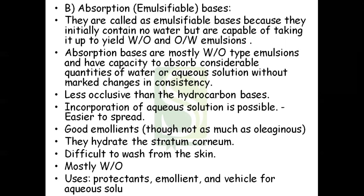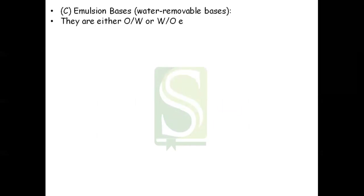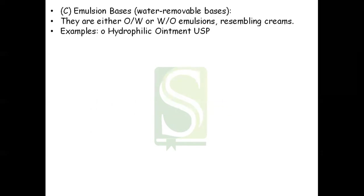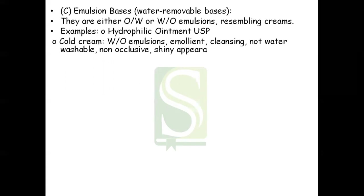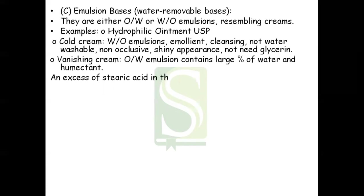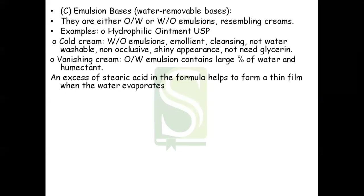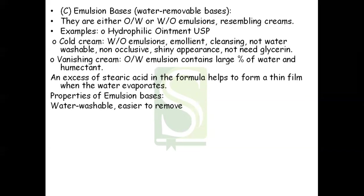Absorption bases are used as protective emollients and vehicles for aqueous solutions and solid drugs. The next type is the emulsion base, also called water removable bases. They are either O/W or W/O type emulsions resembling creams. An example is hydrophilic ointment USP base. In cold creams, W/O type emulsion is used, which acts as an emollient and can also be used for cleansing. It is not water washable and is non-occlusive with a shiny appearance. The vanishing cream is O/W type of emulsion and contains a large percentage of water and humectant. An excess of stearic acid in the formula helps to form a thin film when water evaporates.